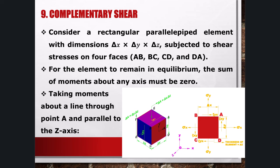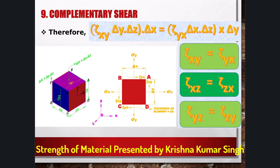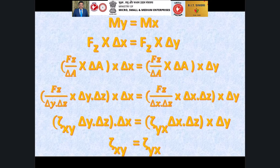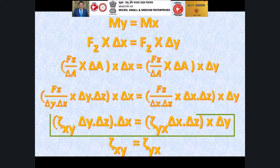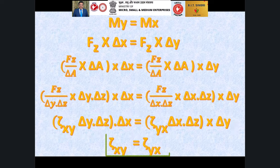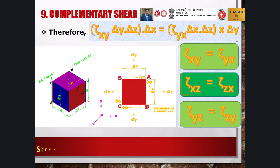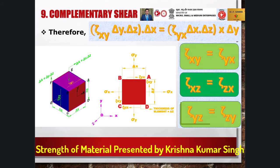Complementary shear. Consider an elementary rectangular parallelepiped delta-x × delta-y × delta-z. The shear stresses on the four faces AB, BC, CD, and DA are shown in figure 1.12. Since the element is in equilibrium, the moment about any axis of all the forces acting on the element must be zero. Equating to zero the moment of forces about a line through A parallel to the z-axis: tau_xy · delta-y · delta-z · delta-x = tau_yx · delta-x · delta-z · delta-y. Therefore, tau_xy = tau_yx. Similarly, tau_xz = tau_zx and tau_yz = tau_zy.